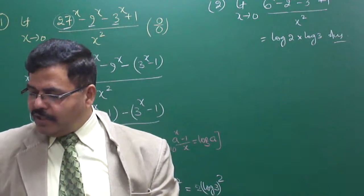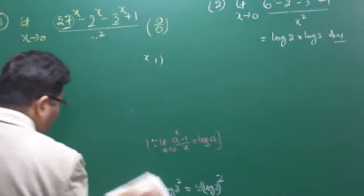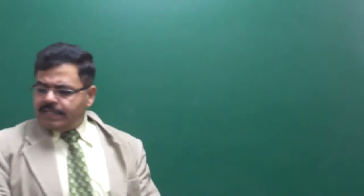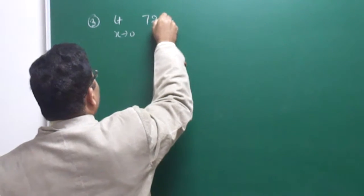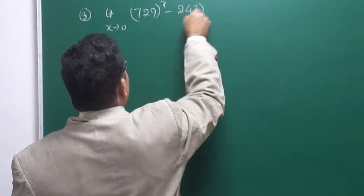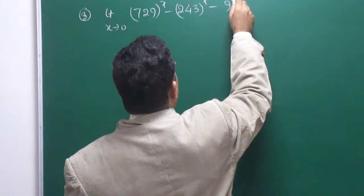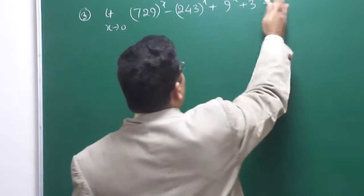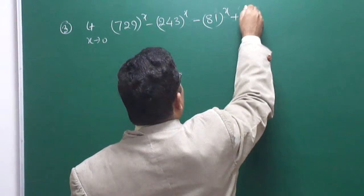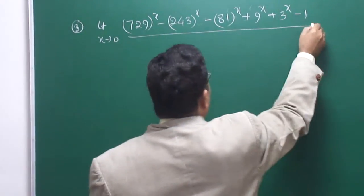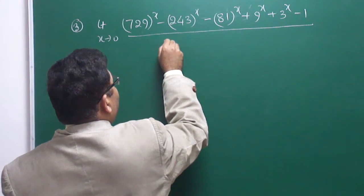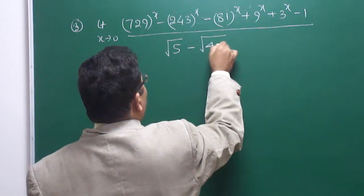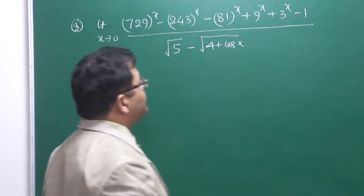Now let me discuss another question of a similar category but slightly different. The third question is: limit x→0 of (729^x − 243^x − 81^x + 9^x + 3^x − 1) all divided by (√(5^x − 4) + cos x).